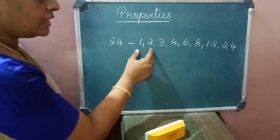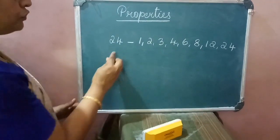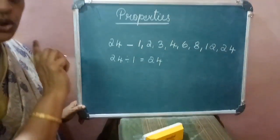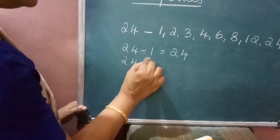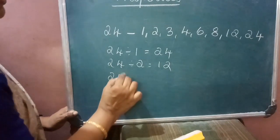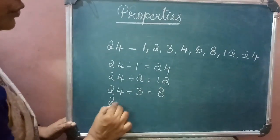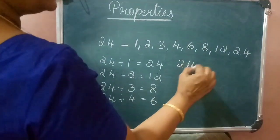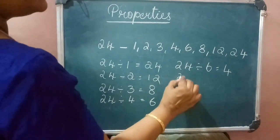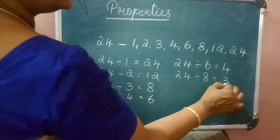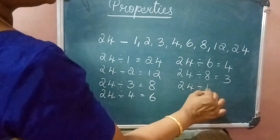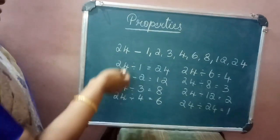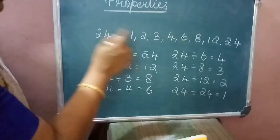The fifth property: every factor of a number divides that number completely with no remainder. For 24: 24 ÷ 1 = 24, 24 ÷ 2 = 12, 24 ÷ 3 = 8, 24 ÷ 4 = 6, 24 ÷ 6 = 4, 24 ÷ 8 = 3, 24 ÷ 12 = 2, 24 ÷ 24 = 1 — all divide exactly.